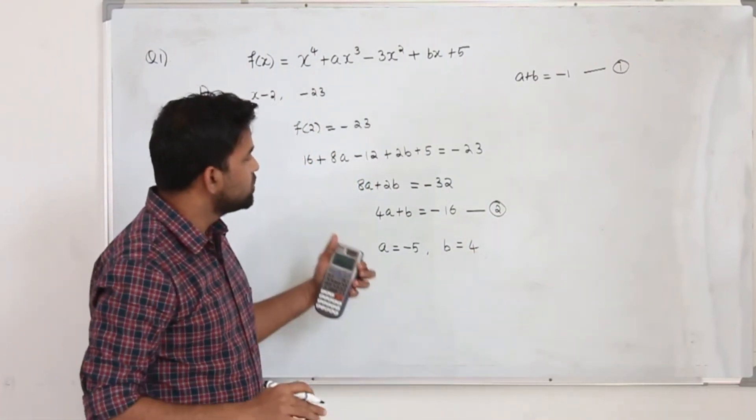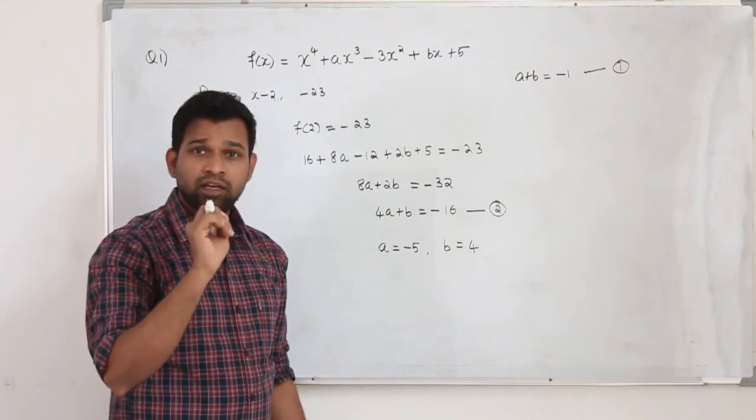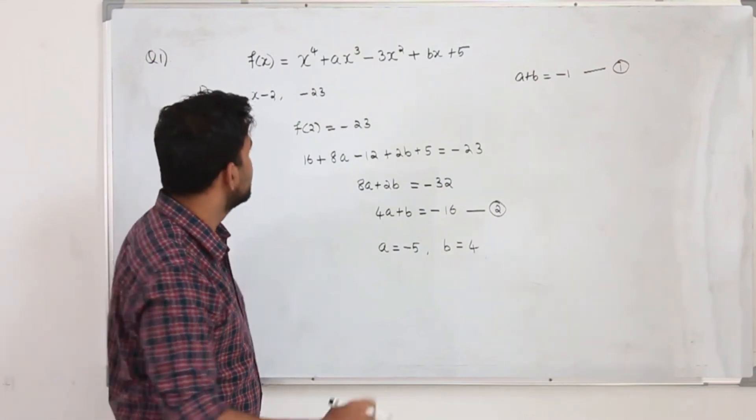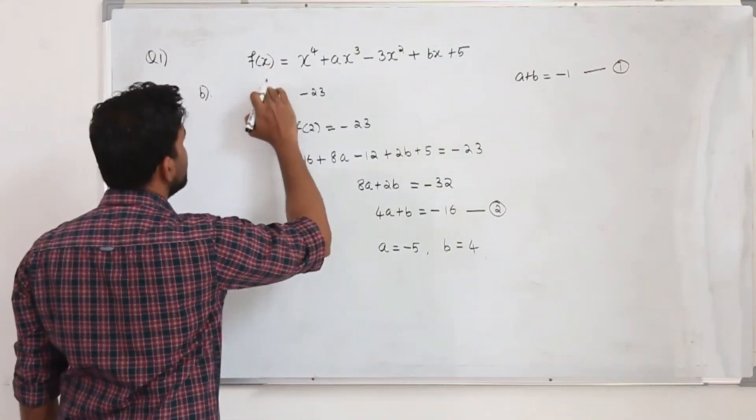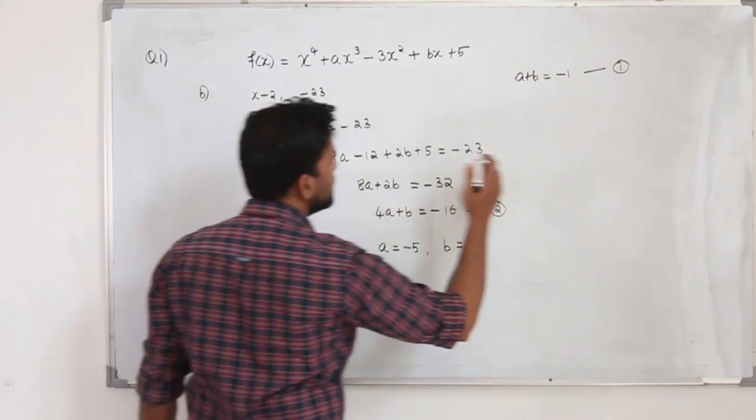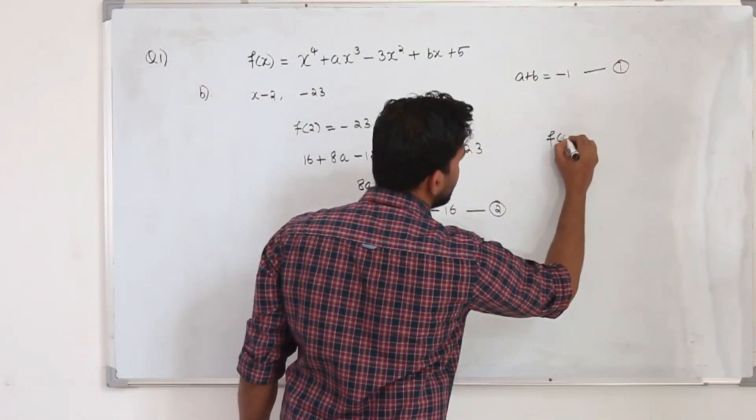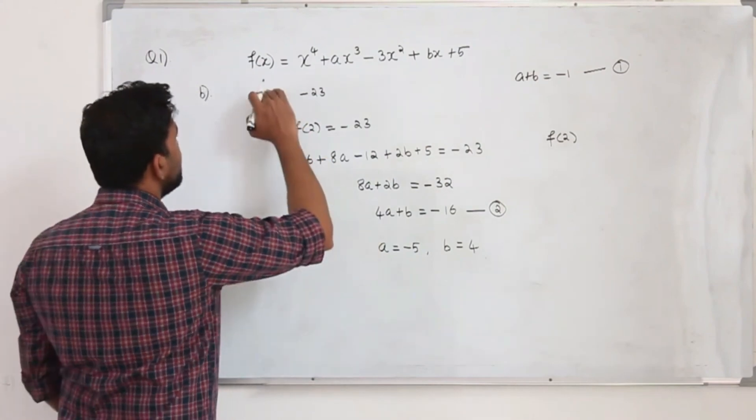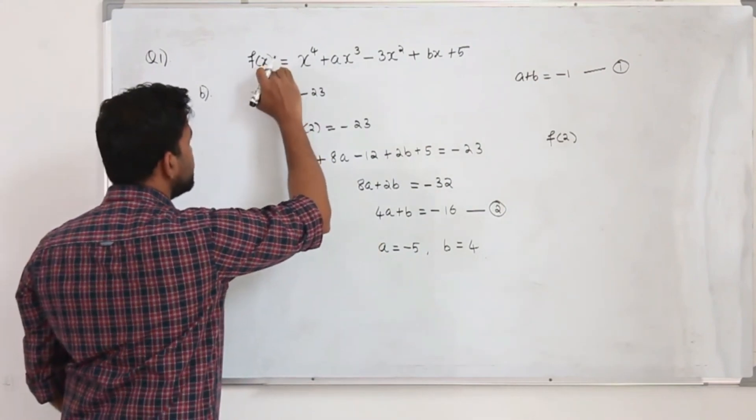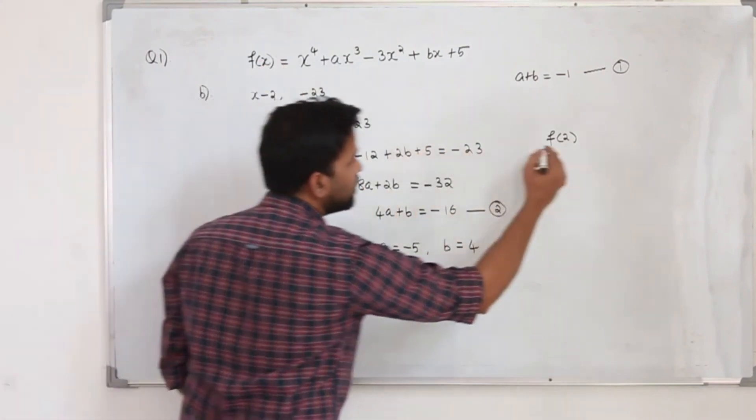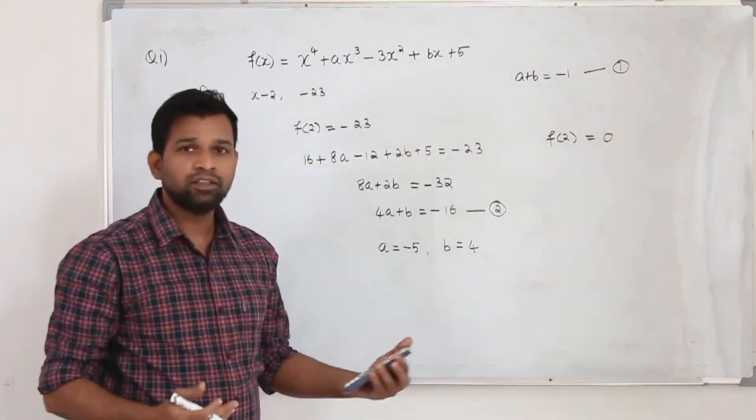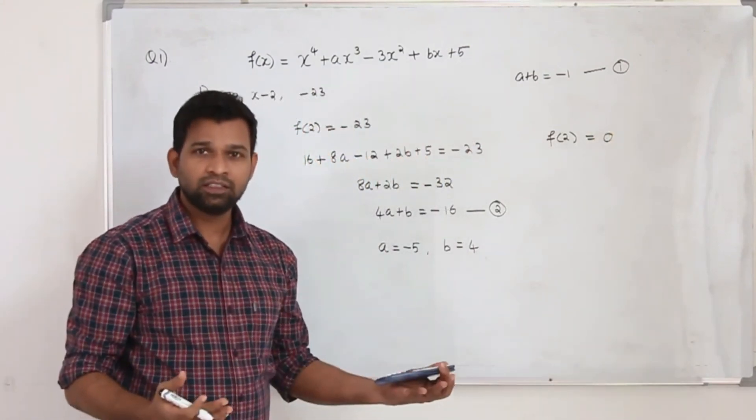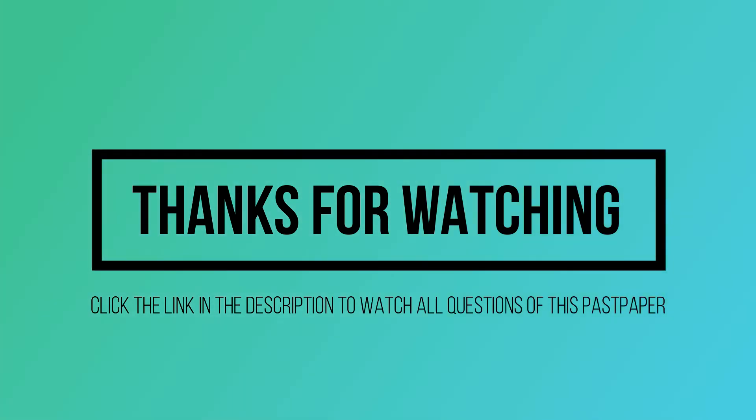So if you want to solve this, first thing you need to learn the remainder theorem and the factor theorem. The remainder theorem is, if a function is divided by x minus 2, the remainder is f of 2. The factor theorem is, if x minus 2 is a factor of this function, so f of 2 will be 0. That's the factor theorem. You need to know the difference between factor theorem and the remainder theorem.